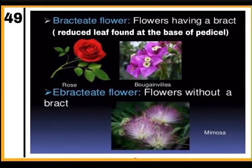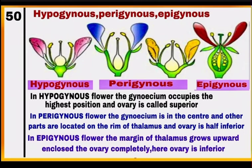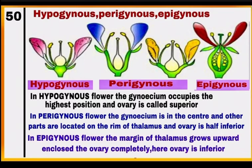Bractate flowers: flowers having a bract, which is a reduced leaf found at the base of the pedicel. Ebractate flowers: flowers without a bract. Hypogynous flower: gynoecium occupies the highest position and ovary is superior, as in mustard, China rose and brinjal. Perigynous flower: gynoecium is in the center and other parts are on the rim of the thalamus; ovary is half inferior, as in plum, rose and peach. Epigynous flower: margin of thalamus grows upward and encloses the ovary completely; ovary is inferior, as in guava and cucumber.